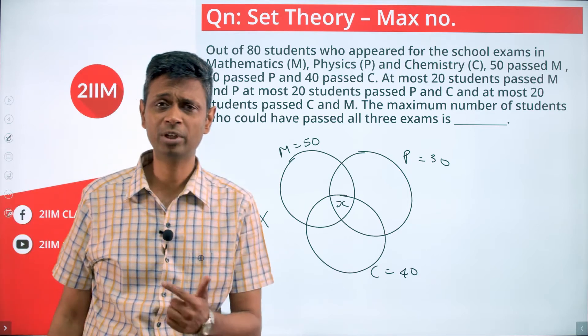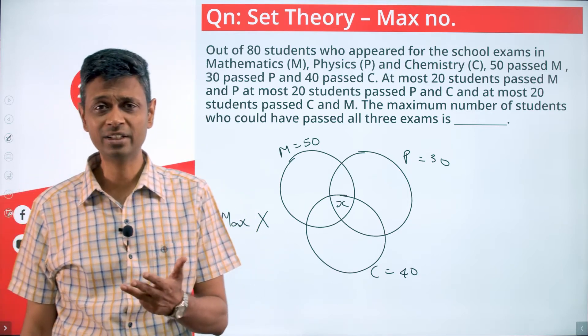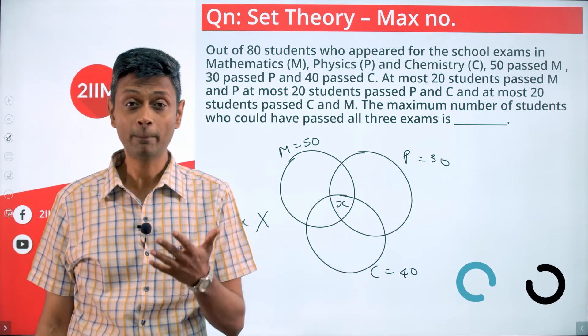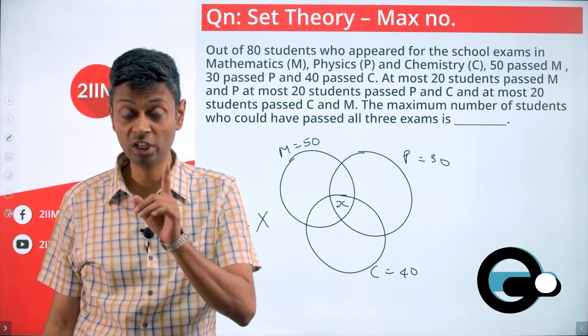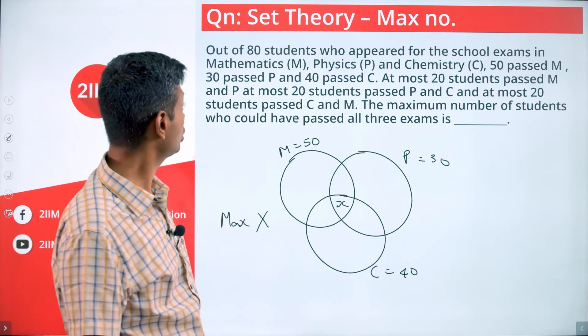A union B union C is A plus B plus C minus A intersection B minus B intersection C minus C intersection A plus A intersection B intersection C. So I want to think about that formula.